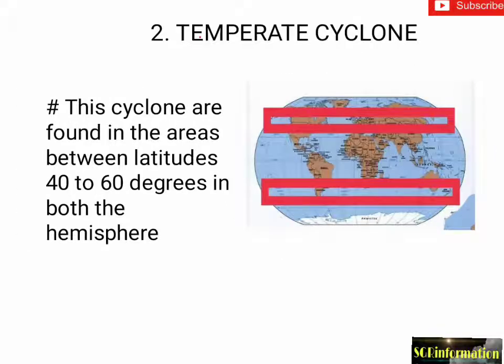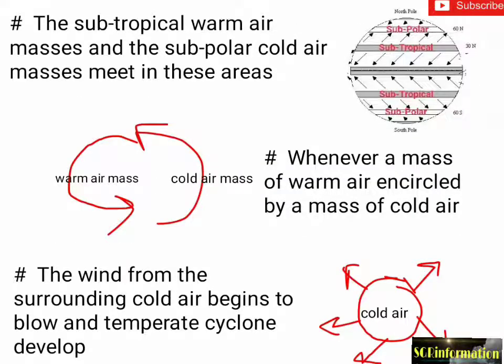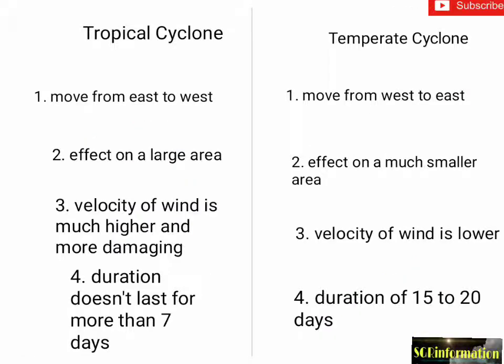Temperate cyclones are found in areas between latitudes 40 to 60 degrees in both hemispheres. The subtropical warm air masses and the subpolar cold air masses meet in these areas. Whenever a mass of warm air is encircled by a mass of cold air, the wind from the surrounding cold air begins to blow, and temperate cyclones develop.